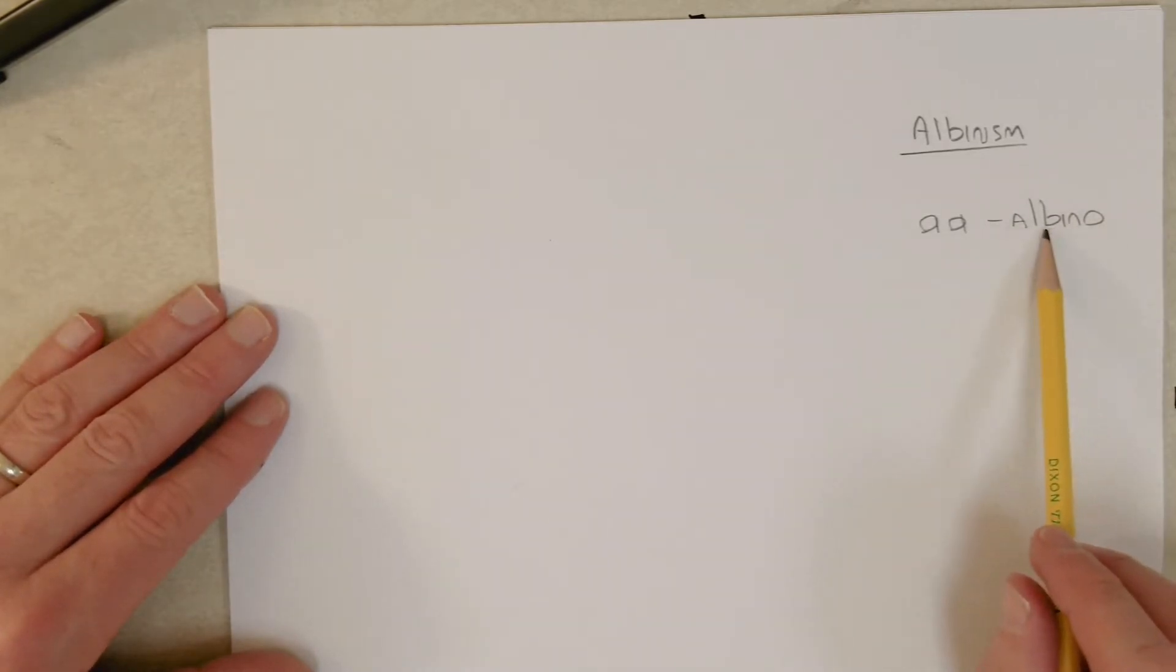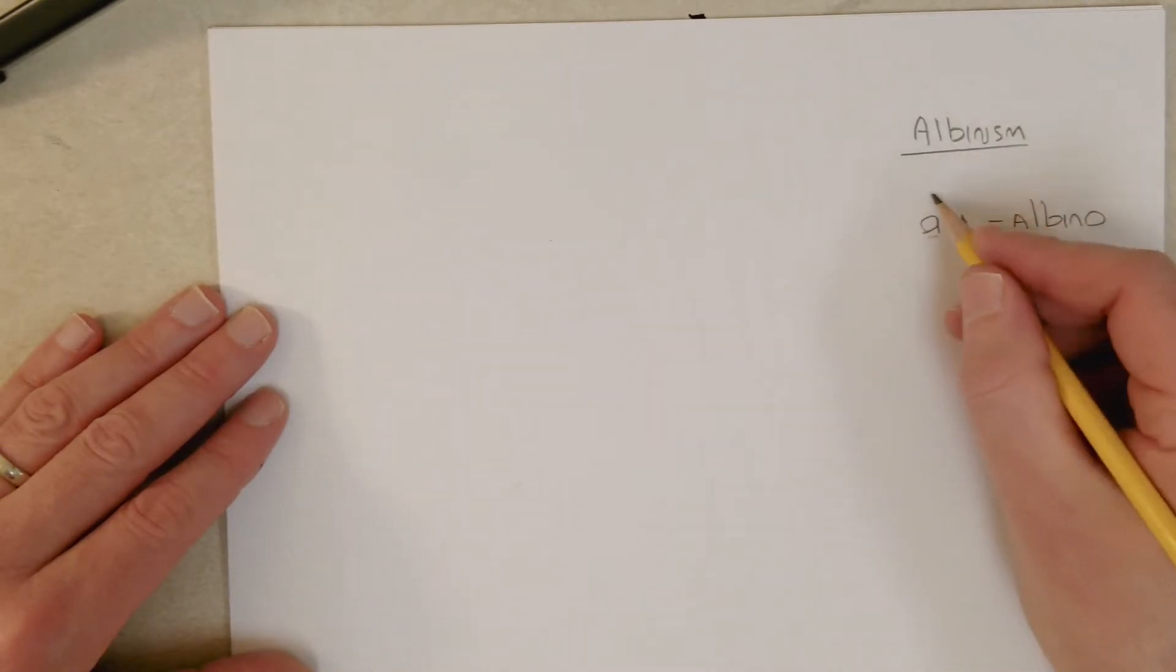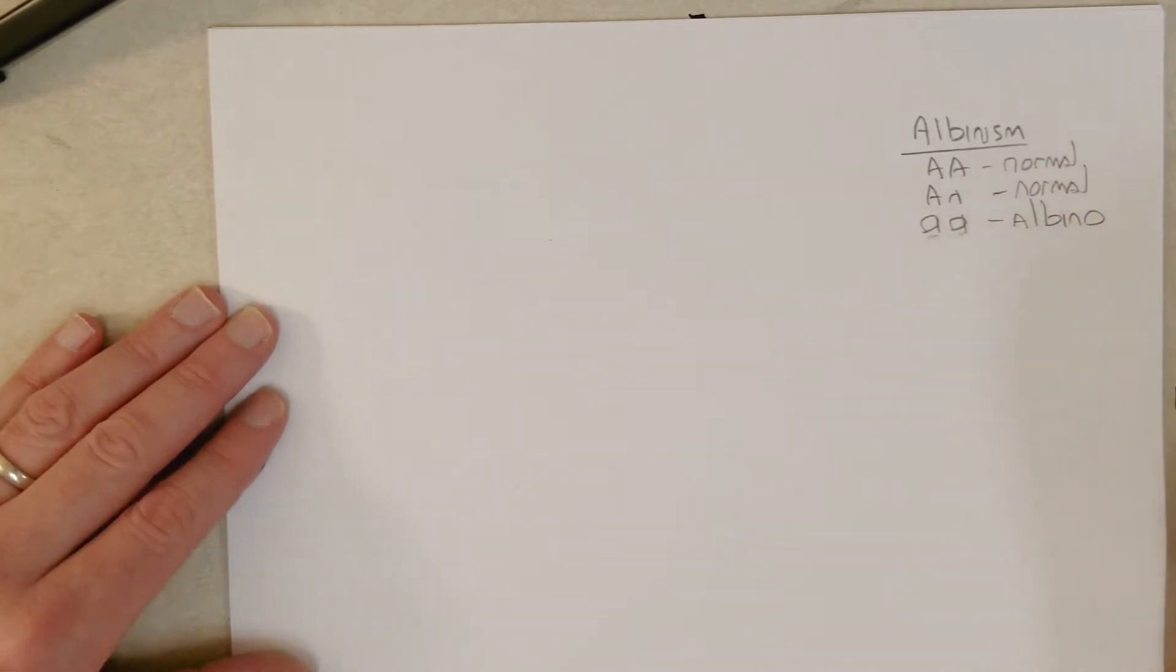Because the question tells us it's a simple recessive trait, that means to have the trait you need to have two recessive alleles, and I am designating recessive alleles as a little a. So we have two other possible genotypes here: heterozygous (Aa) which results in a normal phenotype, and homozygous dominant (AA) normal phenotype.